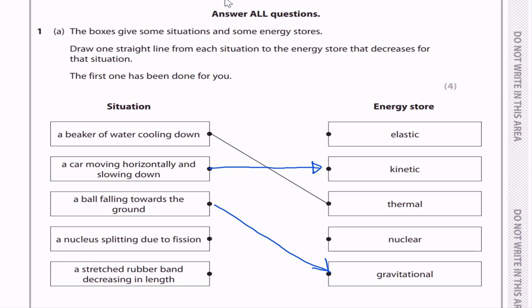The third one has been done for you. A nucleus splitting due to fission — decreases nuclear energy.